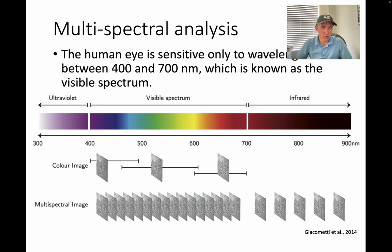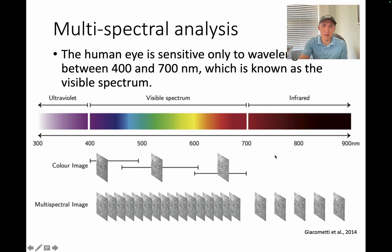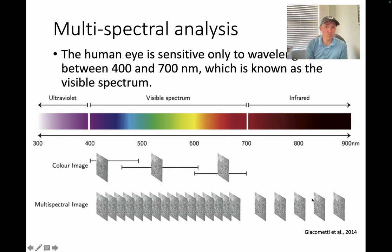Multi-spectral is kind of an extension of optical imaging in the sense that we're using some of the visible spectrum. We have the whole electromagnetic spectrum, and outside the visible spectrum we've got infrared radiation on one end. Multi-spectral imaging often uses some of the frequency bands from the visible spectrum, as well as some frequency bands from spectrums invisible to the human eye.